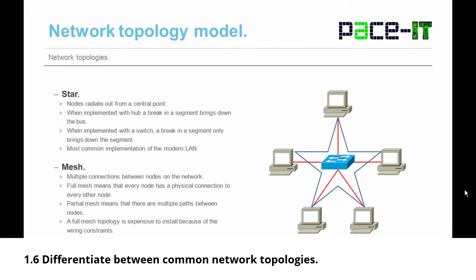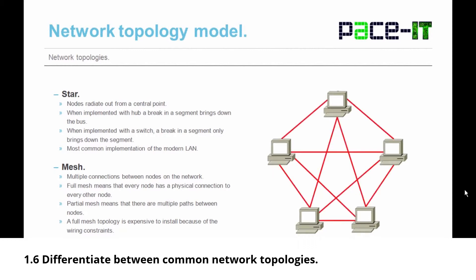Moving on from the ring, we have the star. The nodes radiate out from a central point. When a star topology is implemented with a hub, a break in a segment brings down the whole bus because the hub retransmits out all ports. When implemented with a switch, a break in a segment only brings down that segment. The star with a switch is the most common implementation in the modern LAN.